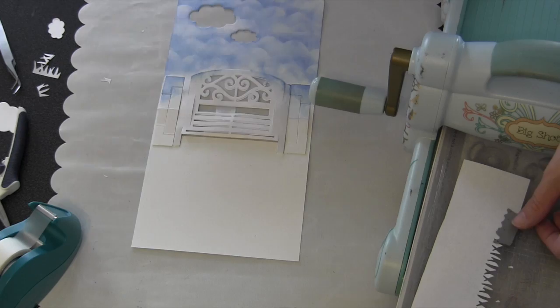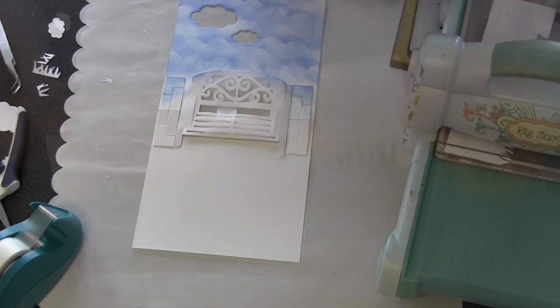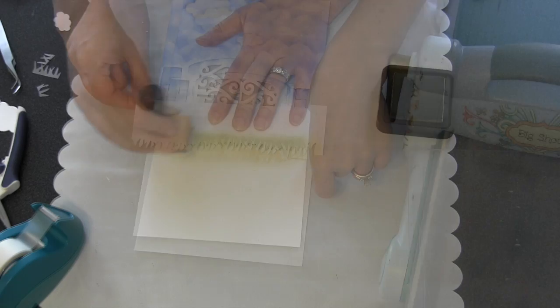For the grassy area, the garden bench actually comes with a grass die. It's just a little small die. What I've done is I just keep moving it along a piece of that same scrap printer paper to make myself a nice long grass template.